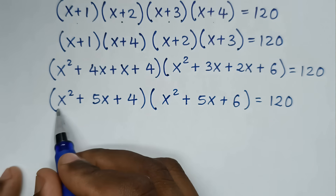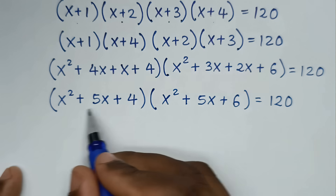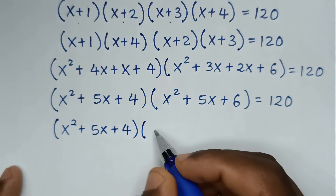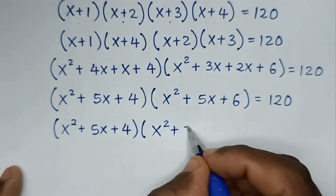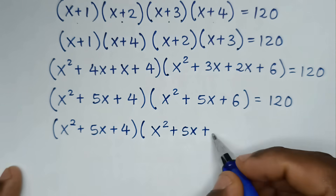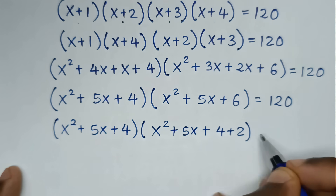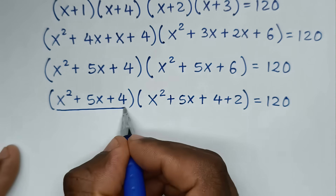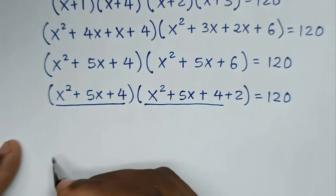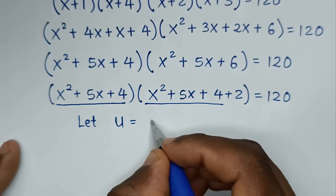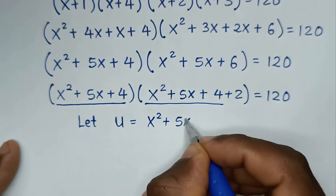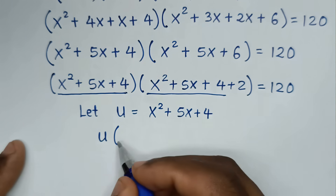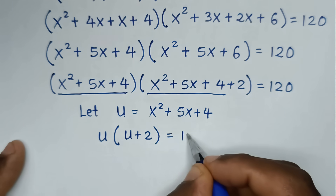In the next step, we notice x² + 5x + 4 is a common expression. We let u = x² + 5x + 4. Then, substituting, we get u(u + 2) = 120.